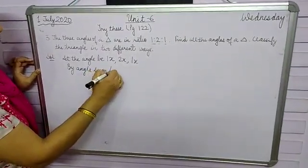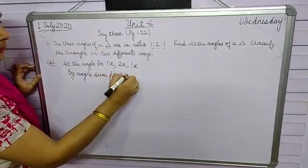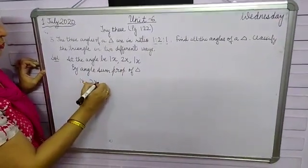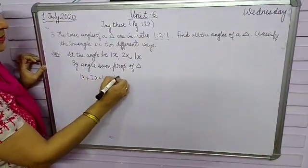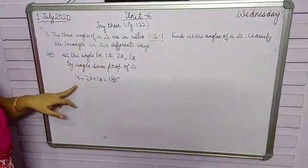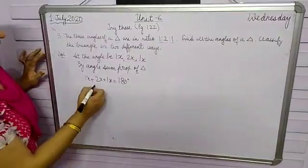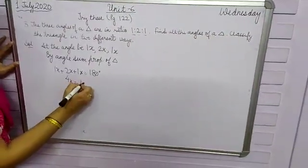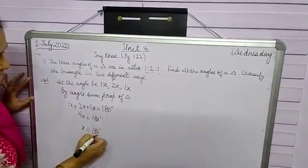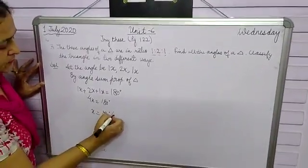According to angle sum property of triangle, 1x plus 2x plus 1x is equal to 180 degrees. Whether you write 1x or simply x, that means the same thing. Now here we have 4x equals 180, and x equals 180 divided by 4, that means 45 degrees.